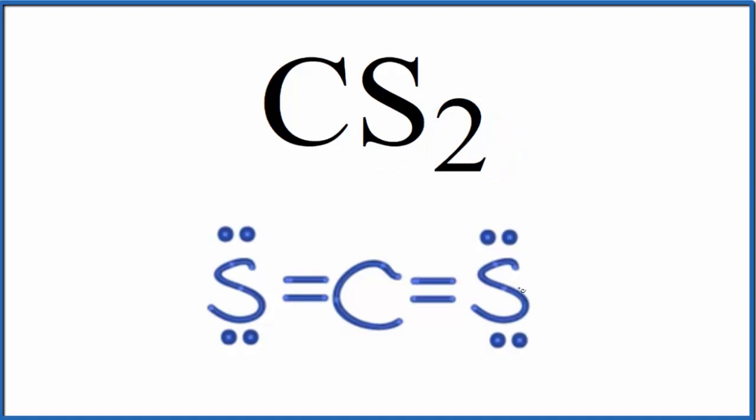So when we look at the Lewis structure, we need to start with a valid Lewis structure. We're normally talking about the central atom when we're talking about lone pairs and bonding pairs, and that's because the central atom, that's the one that really influences the molecular geometry for something like CS2.